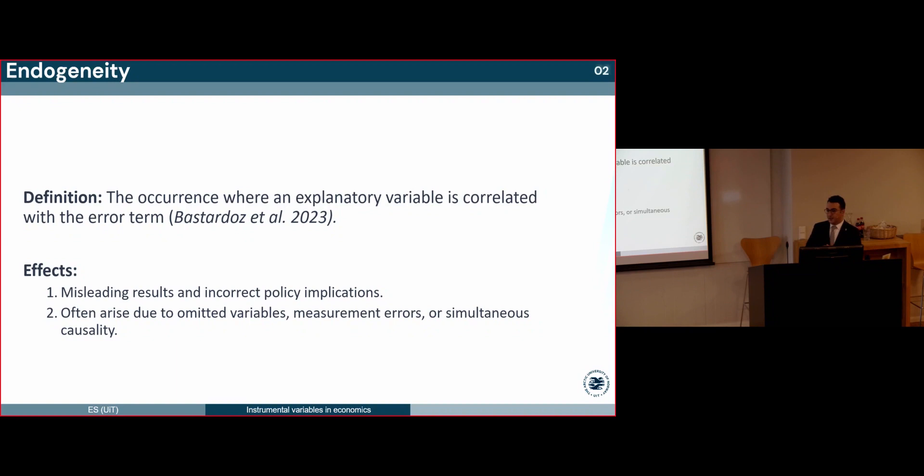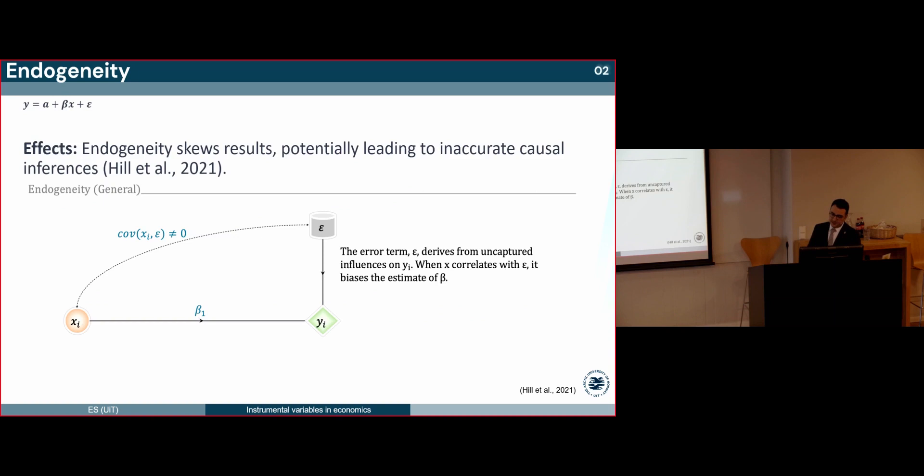Endogeneity. With this foundation, it is crucial to address one of the most prominent challenges in econometrics. This concept, where an explanatory variable is correlated with the error term, can lead to misleading results and incorrect policy implications. As Bastardos et al. noted in 2023, scholars often assert causal claims without the proper data or estimation strategies to support them. In this figure, I visualize the endogeneity in general. The error term, epsilon, emerges because factors that influence Y are not included in the regression function. When the predictor X correlates with the error term, this causes bias in the estimate of beta. This bias can be upward or downward depending on the unmodeled factors that correlate with X and predict Y.